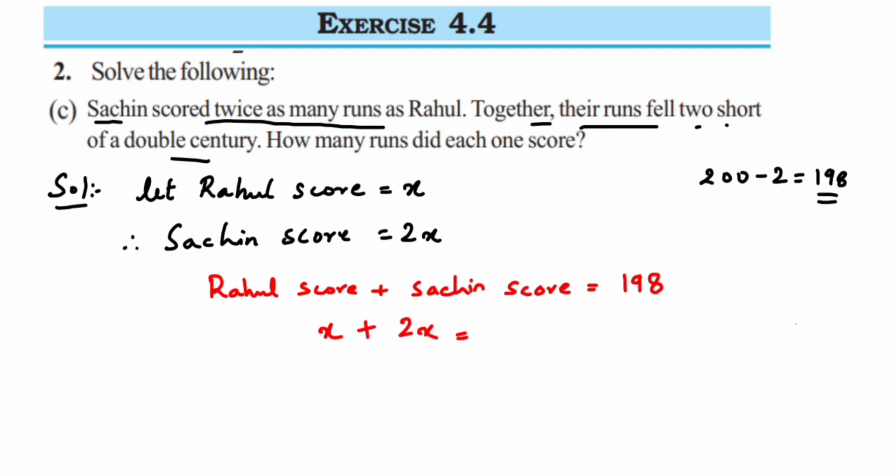Now, Rahul's score is X and Sachin's score is 2X. This is equal to 198. X plus 2X is 3X, so 3X is equal to 198.